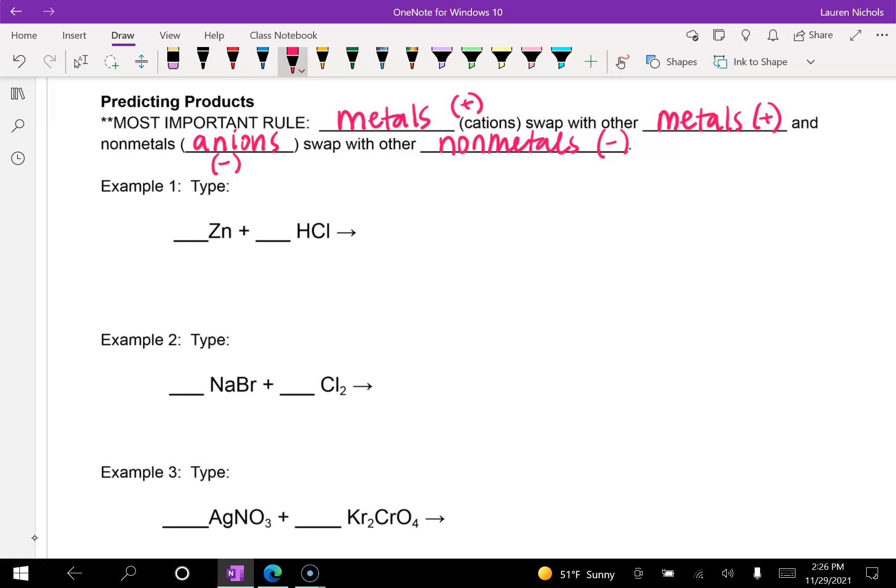When we're looking at our three examples, we see that example one, we've got Zn, which is all by itself, plus HCl. So this is going to be a single replacement reaction. We can see that zinc is the home wrecker. And zinc is more reactive than one of those elements.